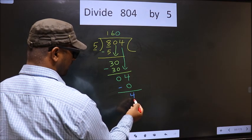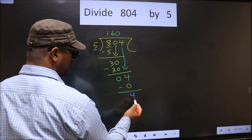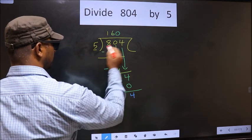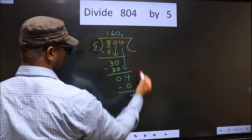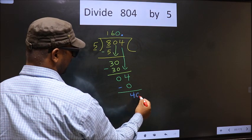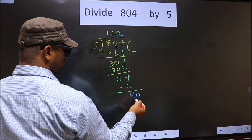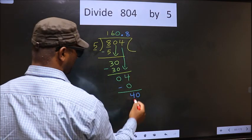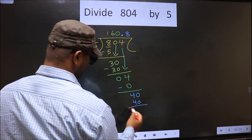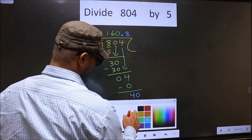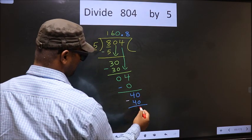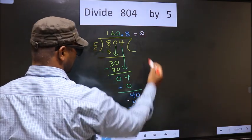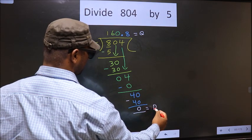Over here we did not bring any number down, and 4 is smaller than 5. So now you put a dot and take 0 here, giving us 40. When do we get 40 in the 5 table? 5×8 is 40. So you subtract: 40 minus 40 is 0. So this is our quotient, and this is our remainder.